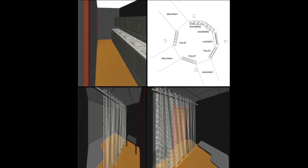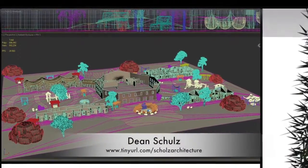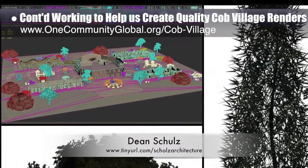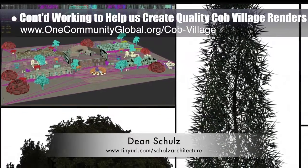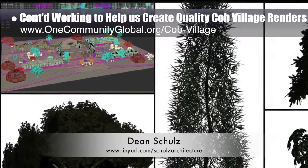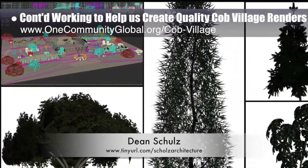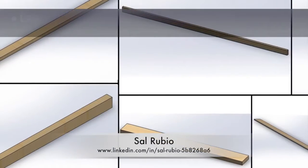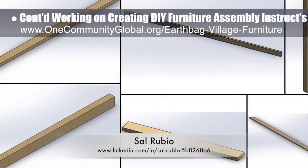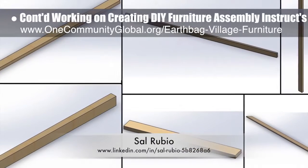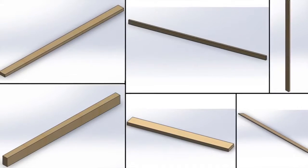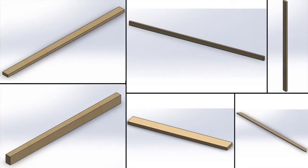Architectural designer Dean Schulz further developed the cob village pod 3 renders — update 22 of his work — creating more high-quality render plants and trees like those that will be growing on the property, and placing them throughout the cob village. Industrial designer Sal Rubio continued working on professional do-it-yourself earth bag village murphy bed furniture assembly instructions — week four of his process of double-checking all pieces and creating SolidWorks versions from the existing SketchUp pieces.